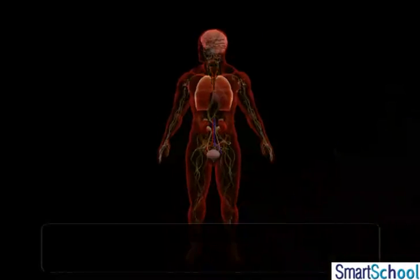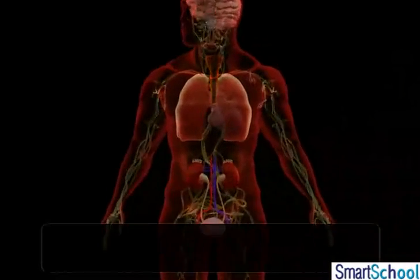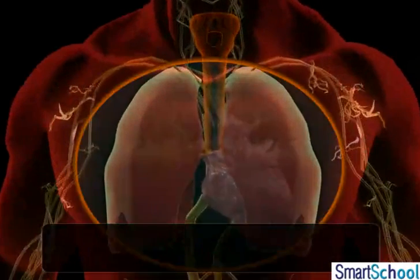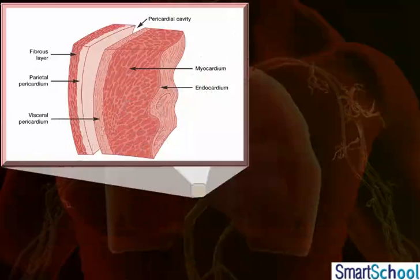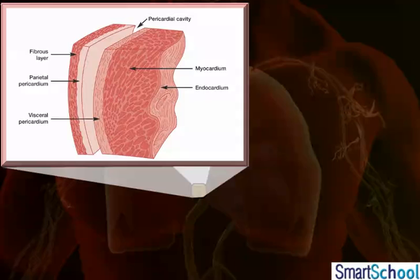The heart is situated between the two lungs in the middle of the thoracic cavity and is surrounded by a protective two-layered sac known as the pericardium. The pericardial fluid secreted in the cavity between the pericardium and the heart reduces friction between the cardiac walls and the surrounding tissues.